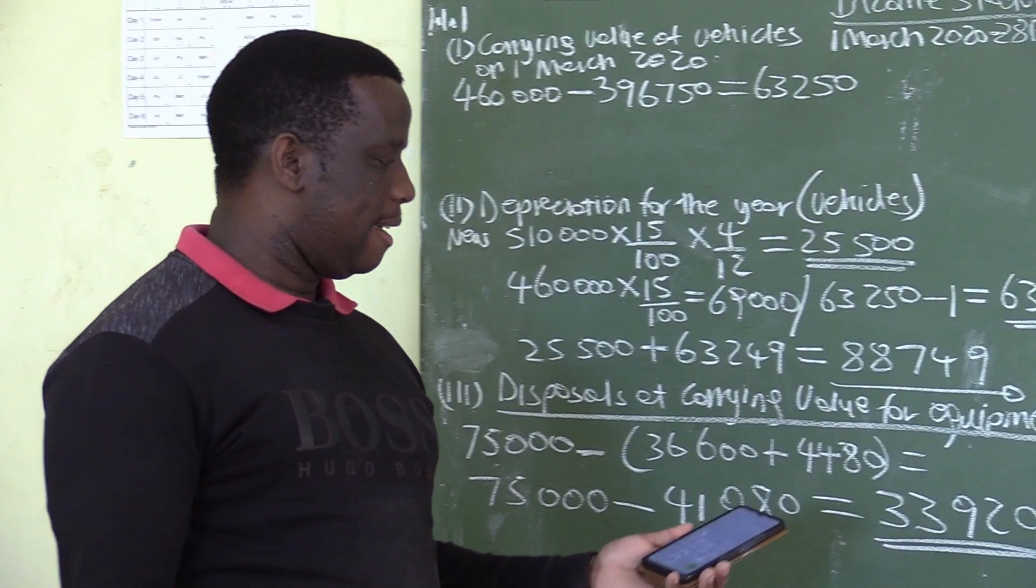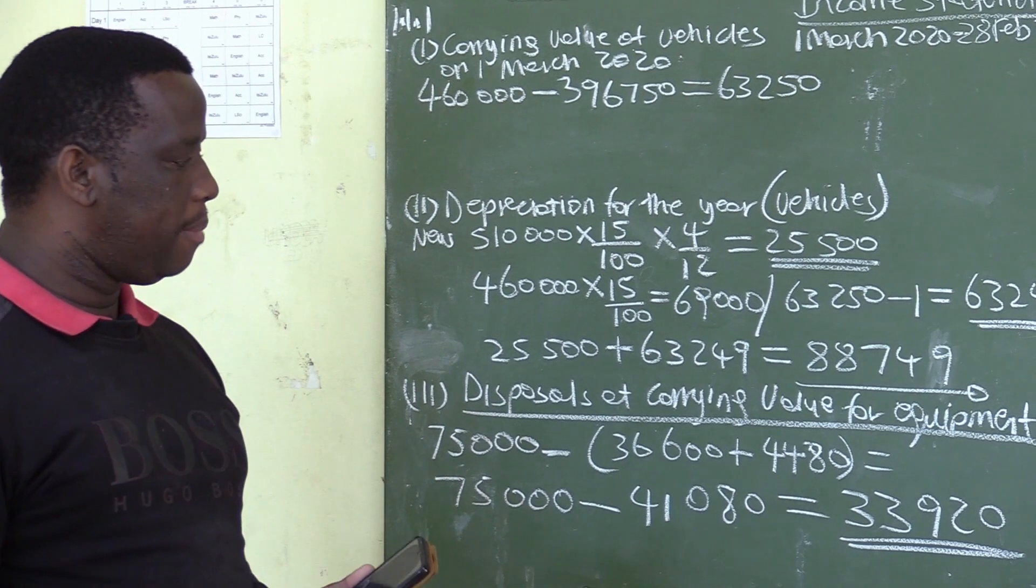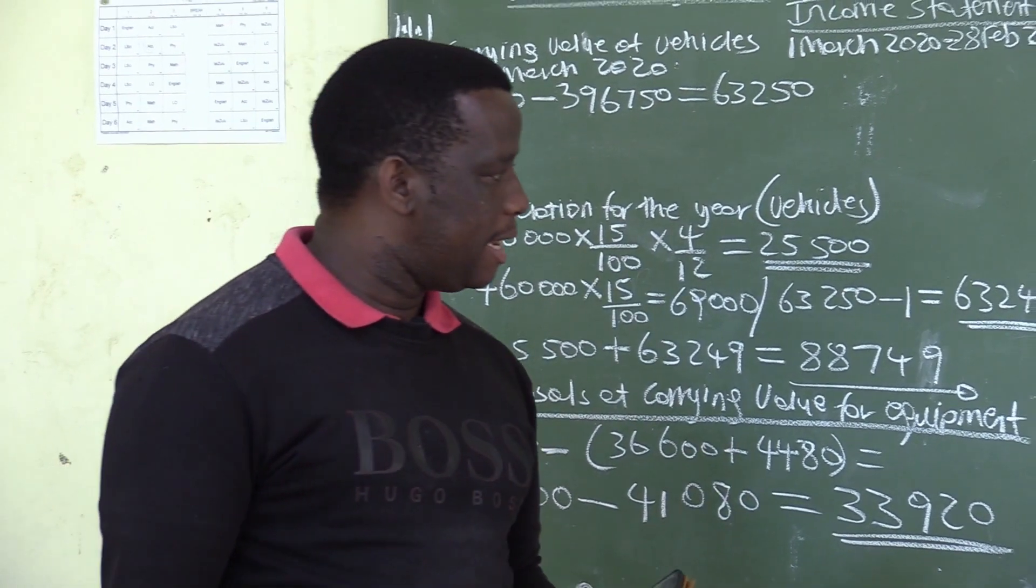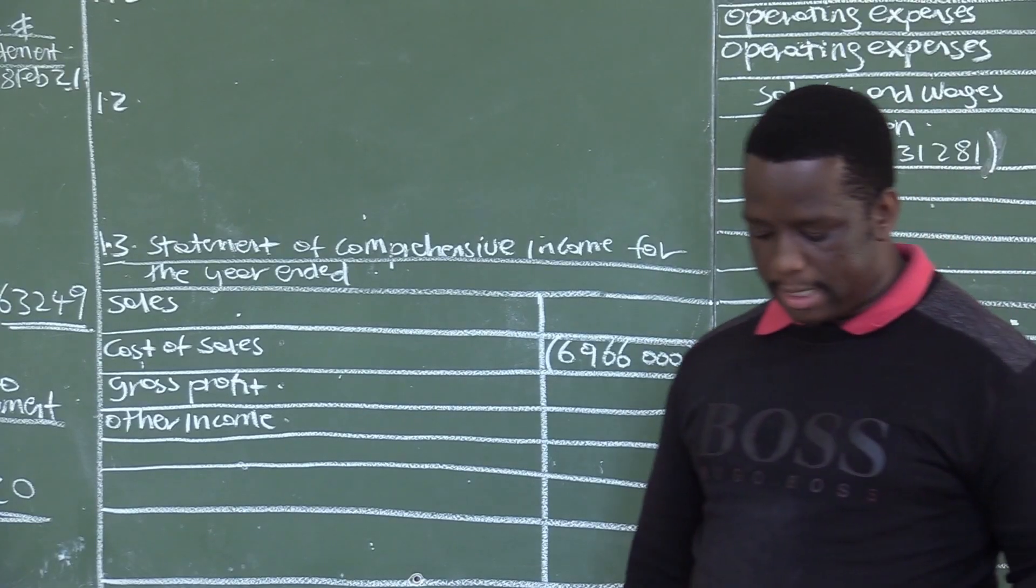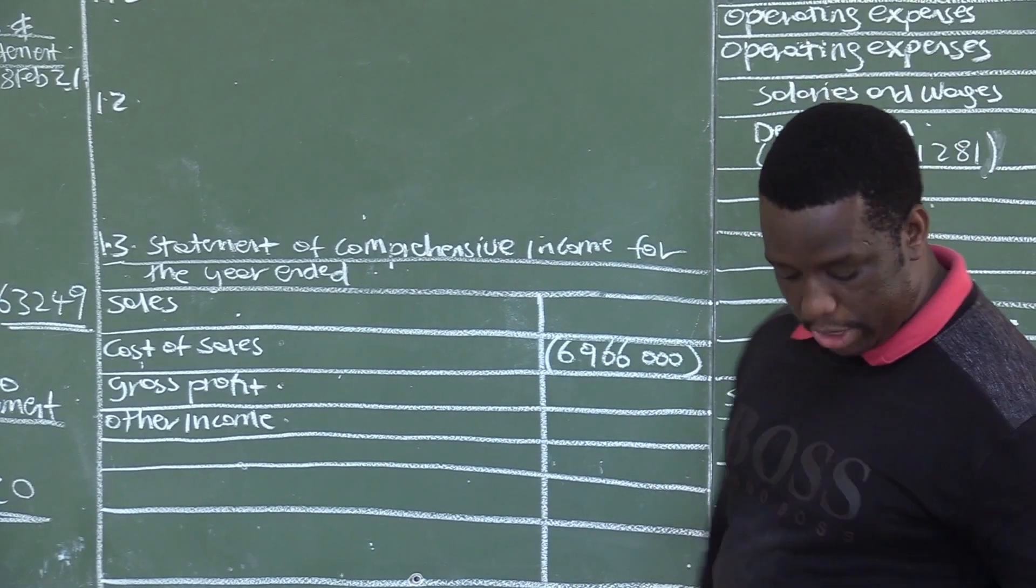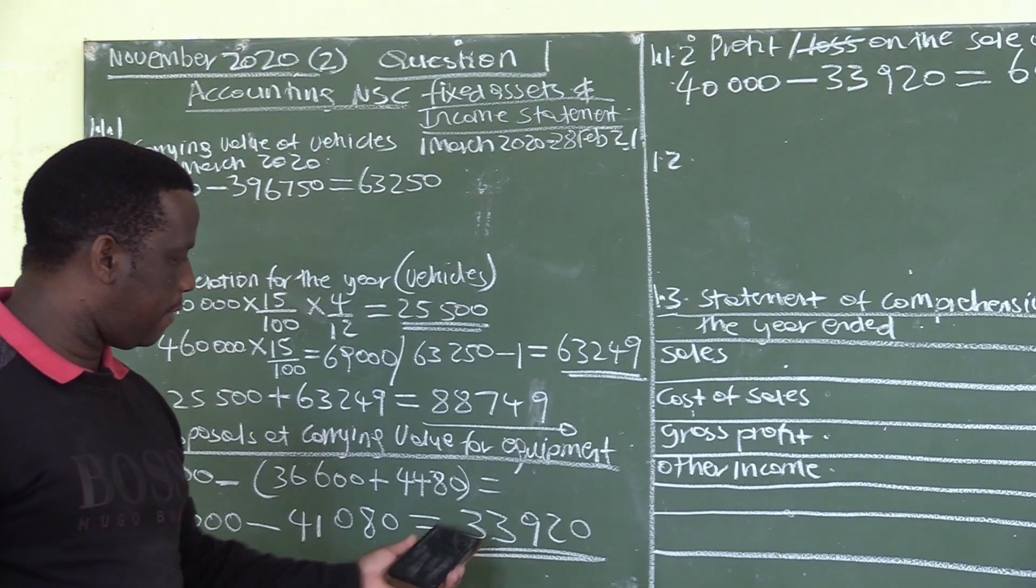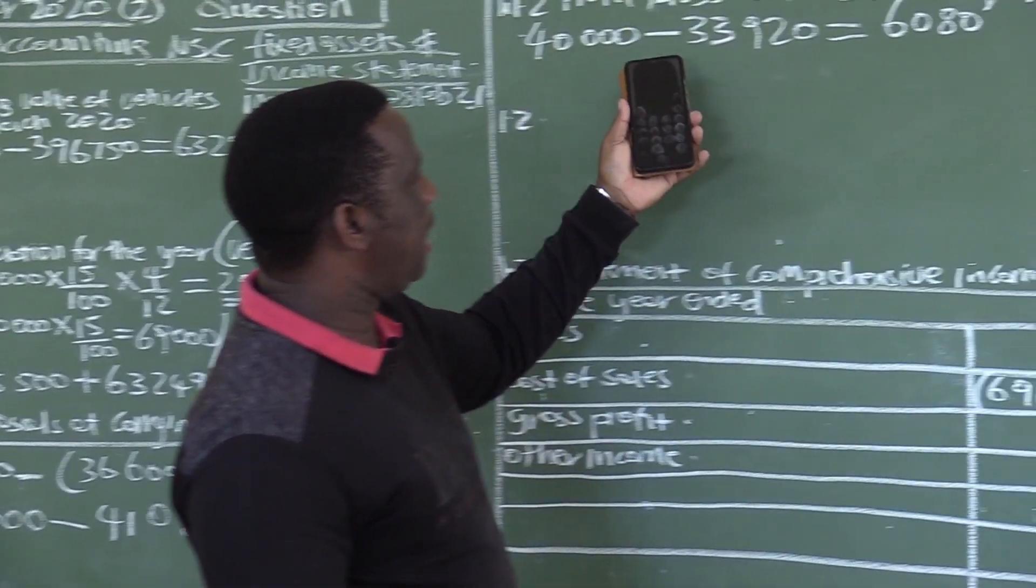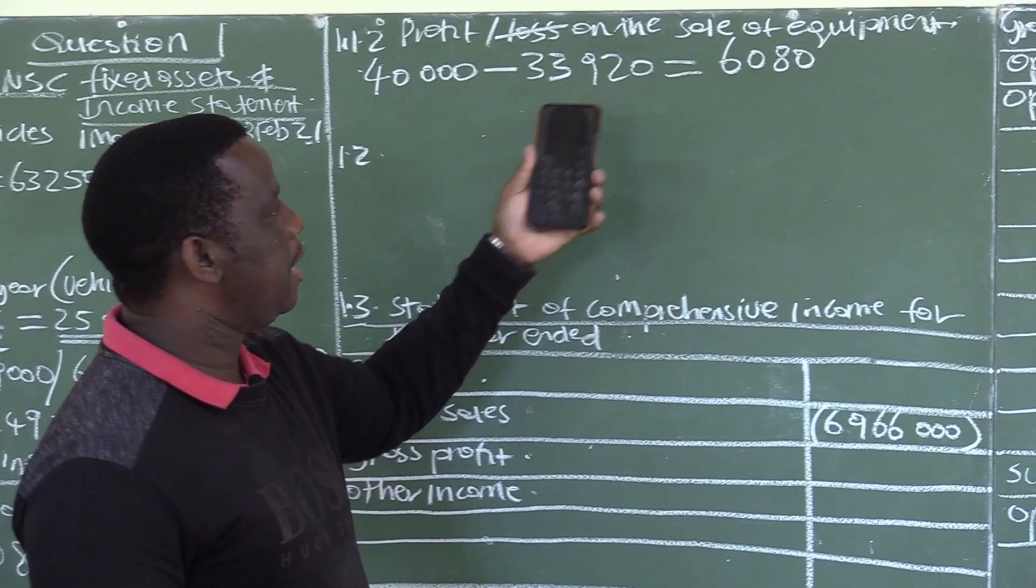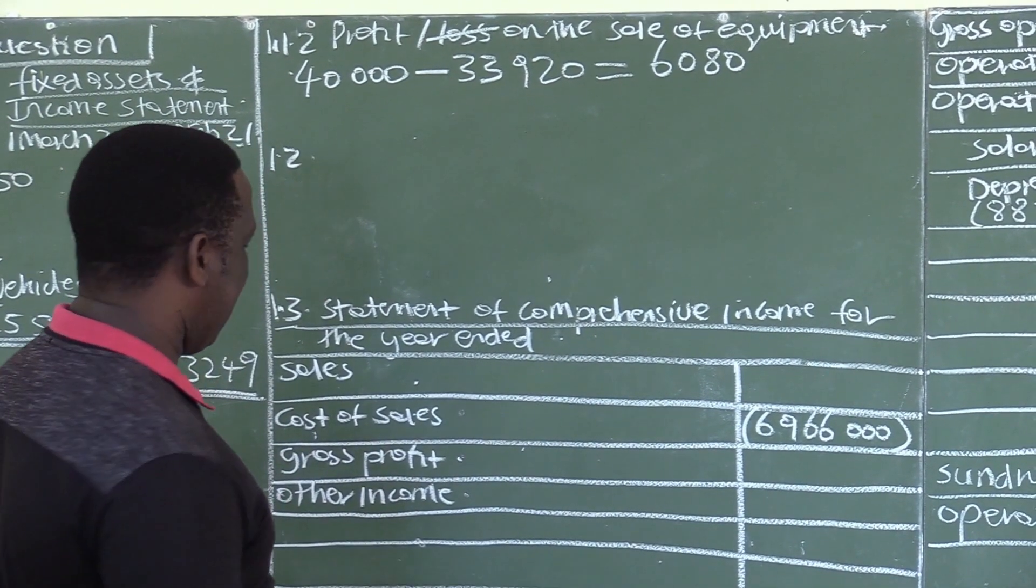If this asset can be sold at 33,920, the business will neither make profit nor loss. This takes us to question 1.1.2. You have your carrying value of 33,920. The selling price is 40,000 minus 33,920, so this business has made a profit of 6,080.